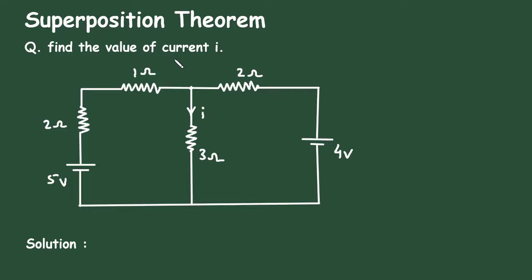To get the free nodes of electrical circuits, check the link in the comment section and install the app for free. Superposition Theorem question: find the value of current I. Here in this circuit, we have to find the value of current I by using Superposition Theorem.